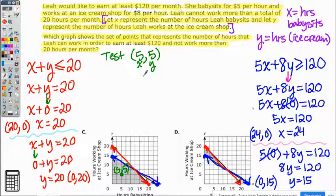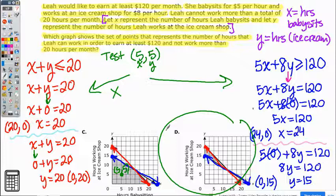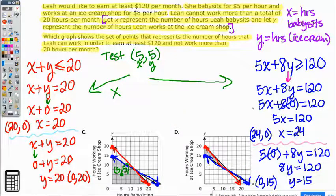So test 5, 5 for both the red and the blue. If it works for the red and it works for the blue, that means this is your correct answer. However, let's say it does not work for one of them. Then that means automatically D has to be your answer because 5, 5 was not shaded. A little confusing, but I'm going to plug it in so you can see.